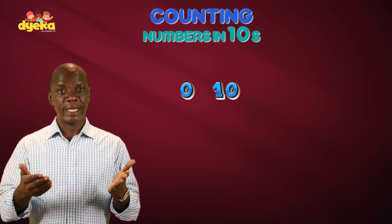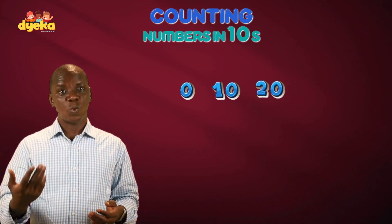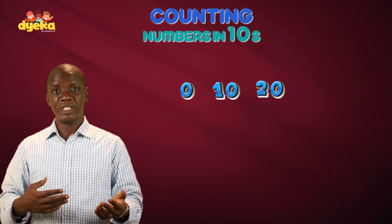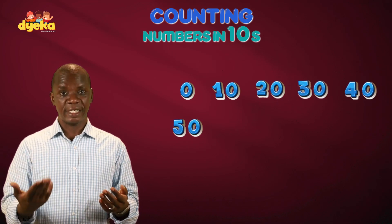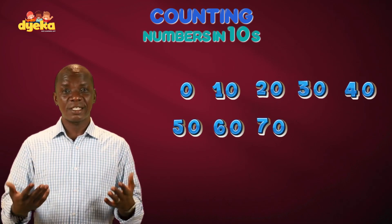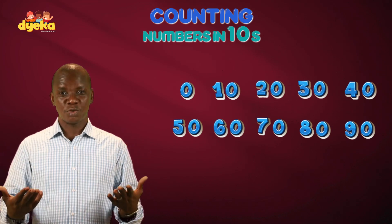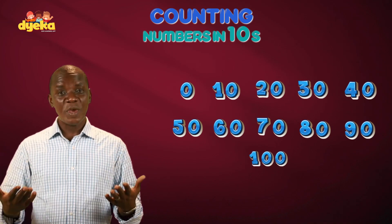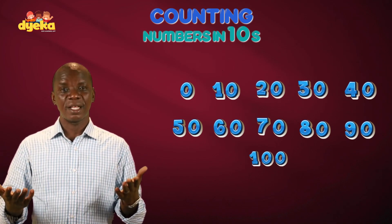From 0 to 100, counting in tens: 10, 20, 30, 40, 50, 60, 70, 80, 90, 100. We just counted in tens.